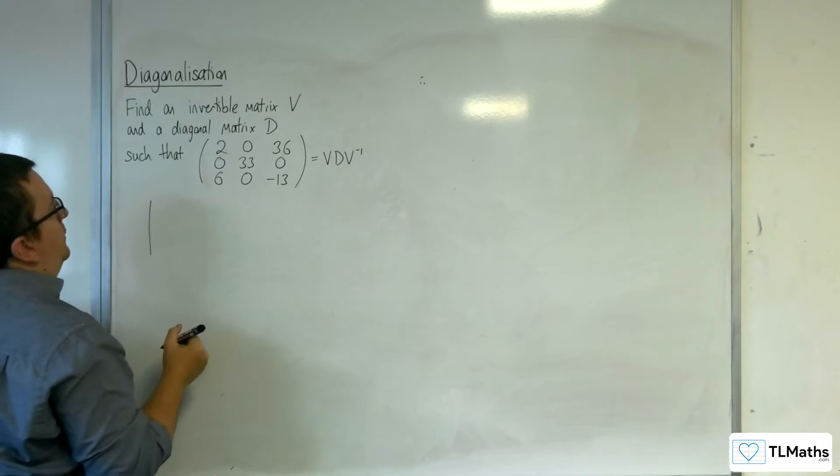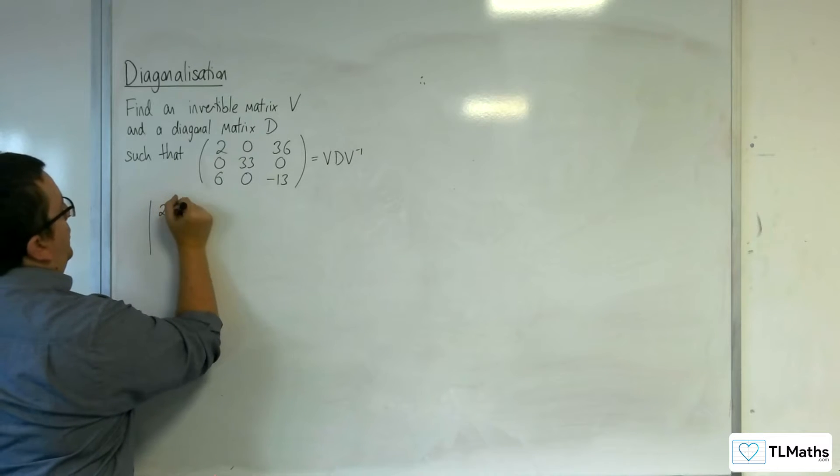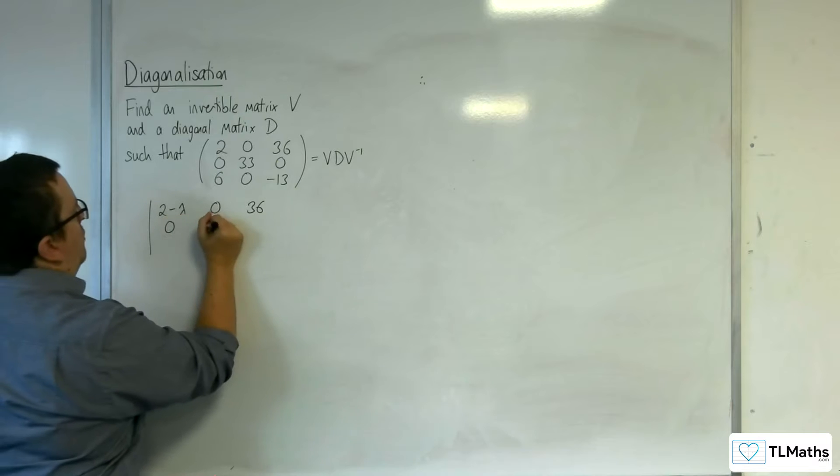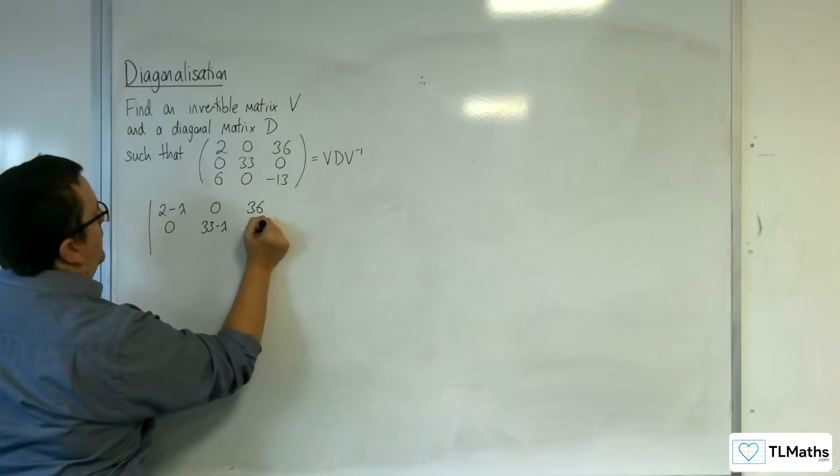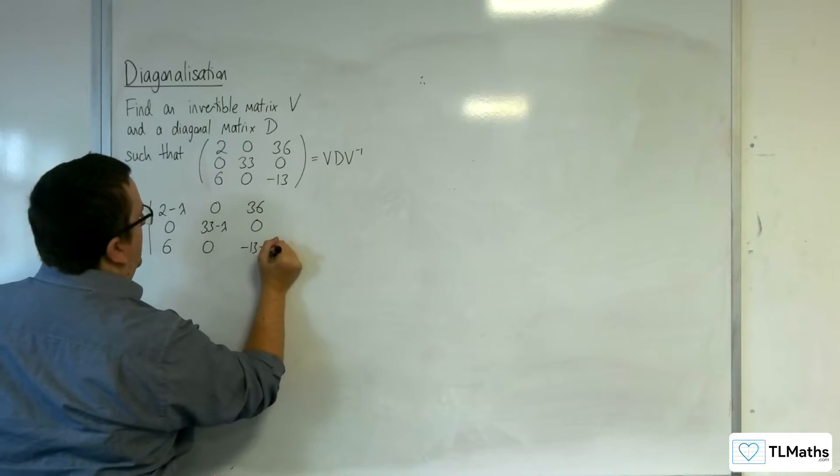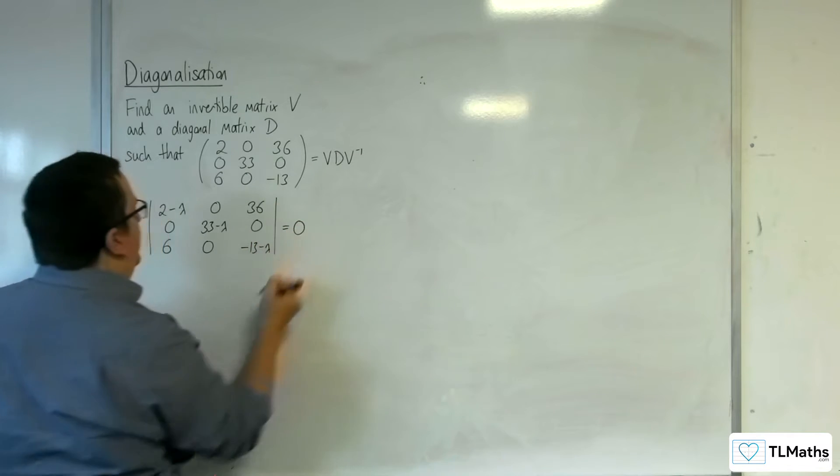Eigenvalues. So the determinant of 2 take away lambda, 0, 36, 0, 33 take away lambda, 0, 6, 0, minus 13 take away lambda will be equal to 0.